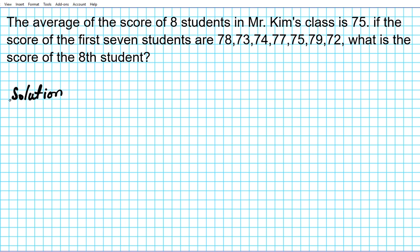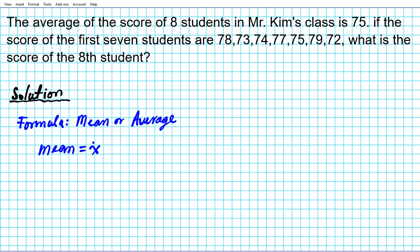We're going to start off by taking a look at the formula for finding average. The formula for average or mean — they mean exactly the same thing — is: the mean, written as X-bar, is the sum of numbers in the data set divided by the number of numbers in the data set.